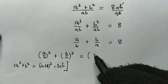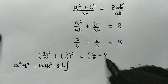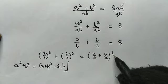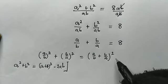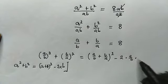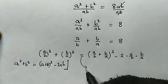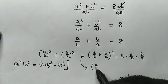According to this property here, minus 2 times the first something, which is a/b, multiplied by the second something, which is b/a. So from here, this is (a/b + b/a)² minus 2, because these two cancel out.